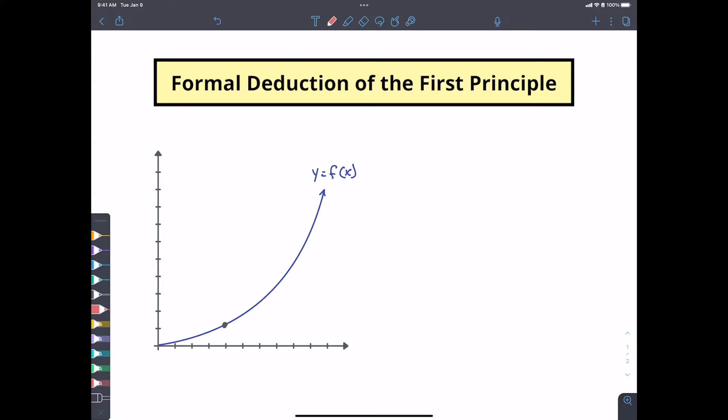The first principle is really all about finding the slope at a given point. Now when we try and find a slope at a given point, what we really need is we need to find a tangent line at this point. The problem is if we have a tangent line, you can even see where this tangent line is going, we need another point off of the curve.